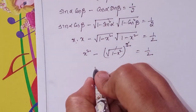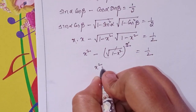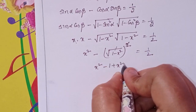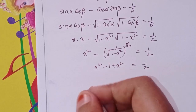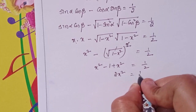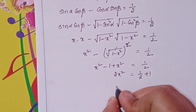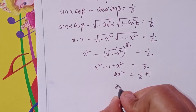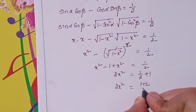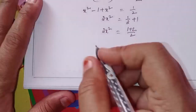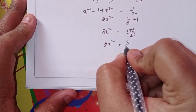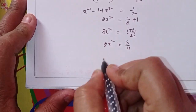The square roots cancel: x² - (1 - x²) = 1/2. So x² - 1 + x² = 1/2, giving 2x² = 1/2 + 1 = 3/2. Therefore x² = 3/4.